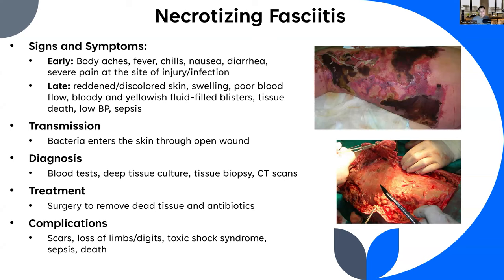To diagnose necrotizing fasciitis, we need blood tests, tissue biopsies with cultures from deep tissues, and CT scans. Treatment requires antibiotics to fight back against the bacteria, and if there's dead tissue - as you can see in these patient images - we need to surgically remove it because the tissue is rotting. Complications include permanent scarring, potential loss of limbs and digits if there's massive tissue loss, and as the disease progresses, toxic shock syndrome, sepsis, and death are all possible. This is a very life-threatening infection requiring prompt intervention.